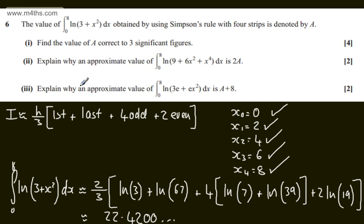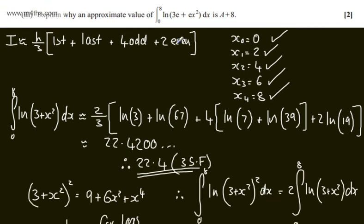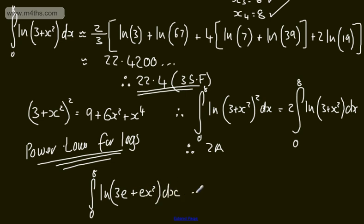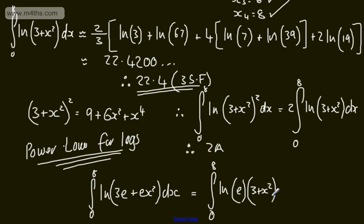In the third part, for another 2 marks, we need to explain why an approximate value of the integral from 0 to 8 of ln(3e + e·x²) dx is a + 8. The integral from 0 to 8 of ln(3e + e·x²) dx can be written, by taking out the factor of e, as the integral from 0 to 8 of the natural log of e(3 + x²) dx.